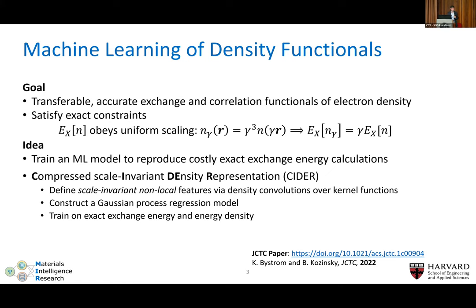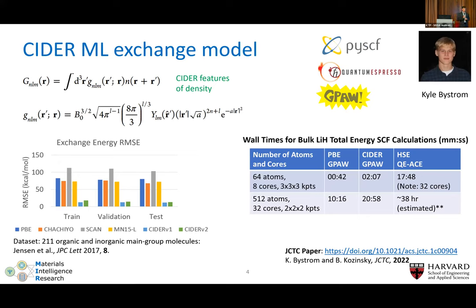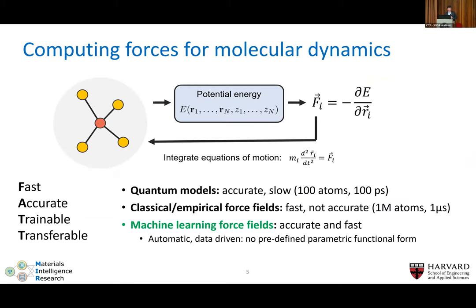We do this by introducing a set of features on the density, learning a model based on Gaussian process regression, where the features are non-local and built through convolutions. We use the exact exchange energy as a reference. It seems the answer is yes — we can capture exchange energy better than some of the leading density functionals. This approach, called CIDER, shows promise, as indicated in comparisons of performance between exact exchange calculations and these CIDER calculations.